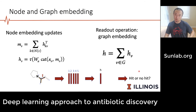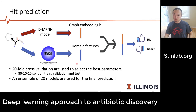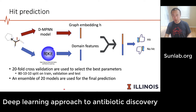For example, the classifier predicts whether a molecule will be a hit as an antibiotic candidate. Before building the classifier, they also combine the graph embedding with some domain-specific features and use that together as the feature vector. They then use cross-validation to build an ensemble of 20 models to make the final prediction.